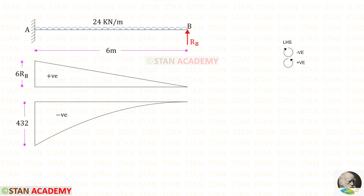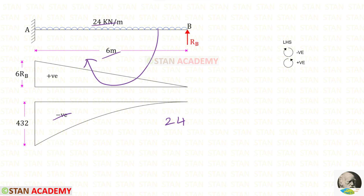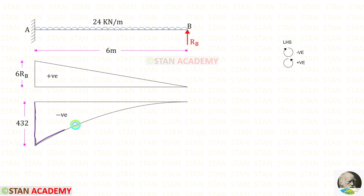Now let us take the uniformly distributed load. It is acting in the clockwise direction so that it will be negative. With the uniformly distributed load, we have to multiply the distance and then the distance by 2. When we calculate this, we get 432, and the diagram will be in the shape of a second degree parabola.